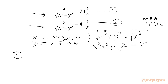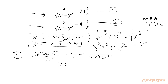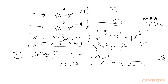Now let's see equation 1 after our substitutions. We write x = r·cosθ in the numerator and r in the denominator, giving r·cosθ / r = 7 + (1/r)·cosθ. The r's cancel, so we get cosθ = 7 + (1/r)·cosθ. Let's call this equation 3.